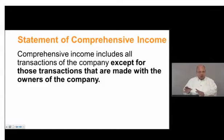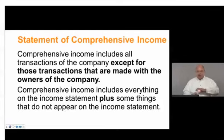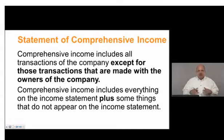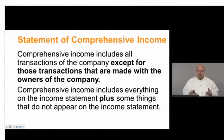There is a handful of transactions the effect of which are not going to be put on the income statement. These are what are called other comprehensive income items. So comprehensive income includes everything on the income statement plus some items that do not appear on the income statement, because that is what the standard requires. This isn't a decision that the company makes — the standard requires these items not be reported on the income statement.